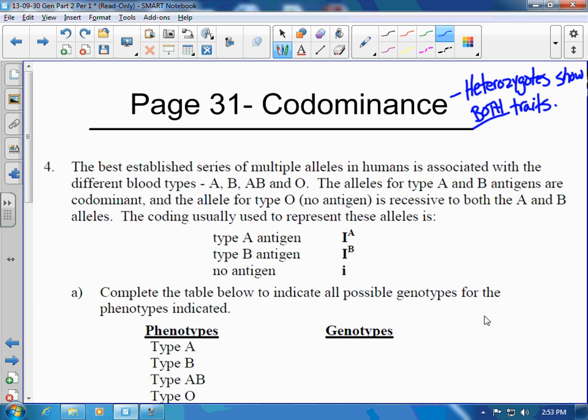It's different from incomplete dominance. When we said something was incompletely dominant, you showed a blending of the traits, like red flowers mating with white flowers yielding pink flowers. Here, if the same scenario was presented but they were co-dominant, then red flowers would mate with white flowers and would show red and white dots or red and white stripes.